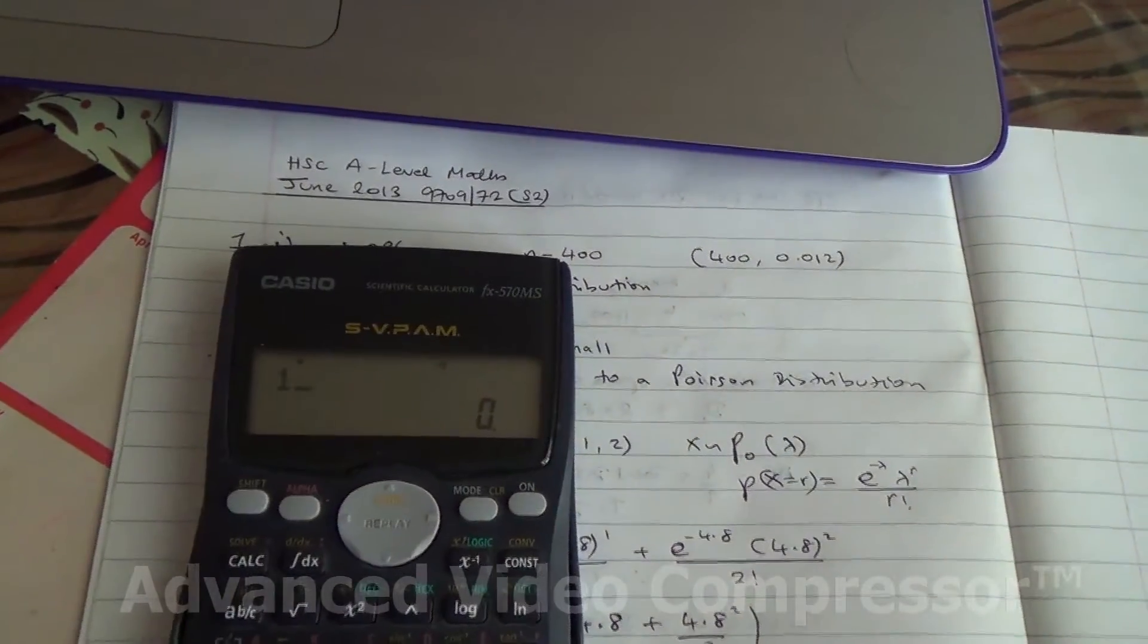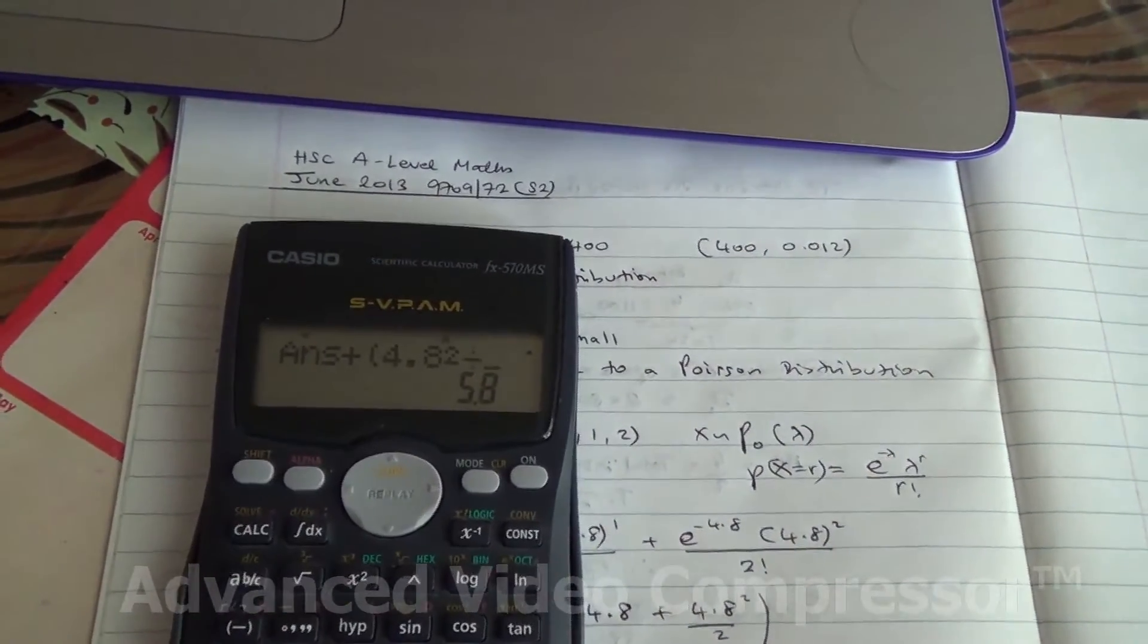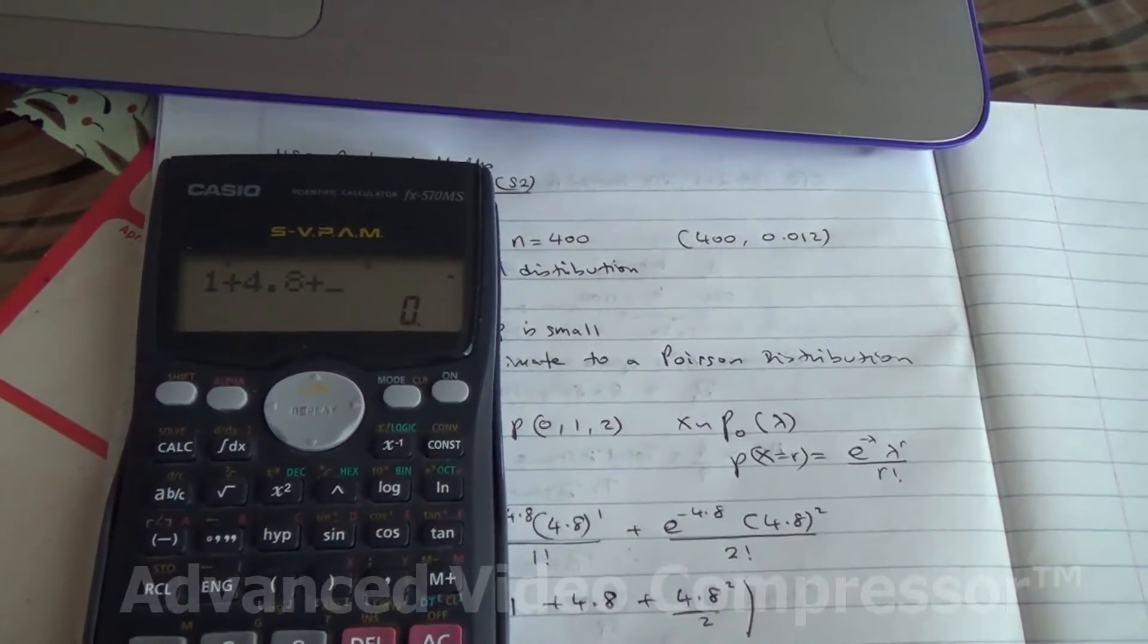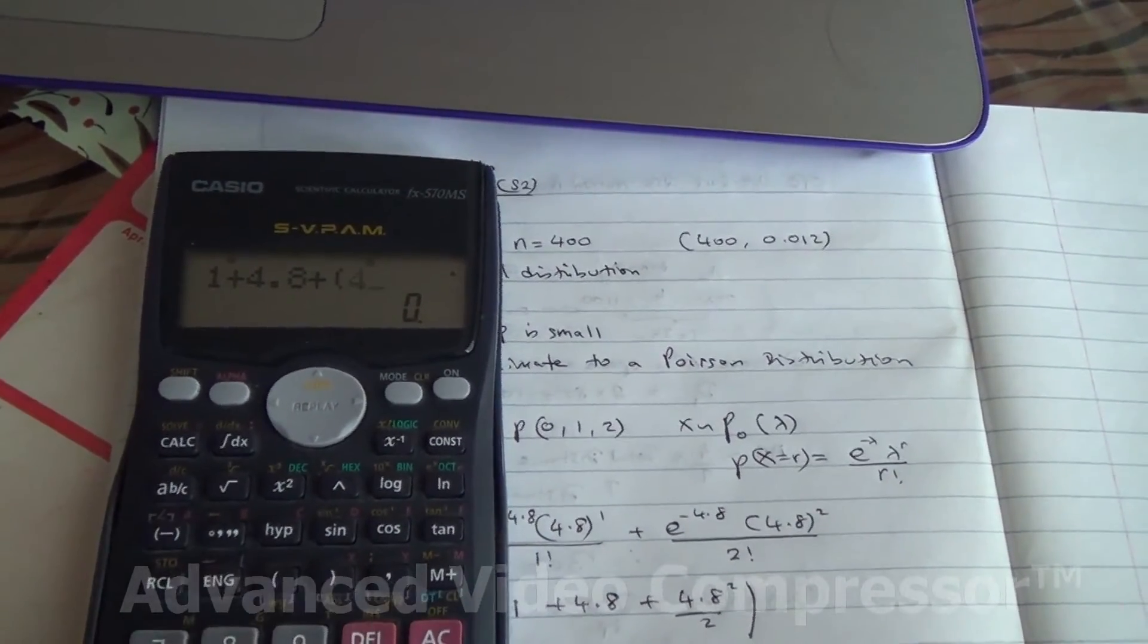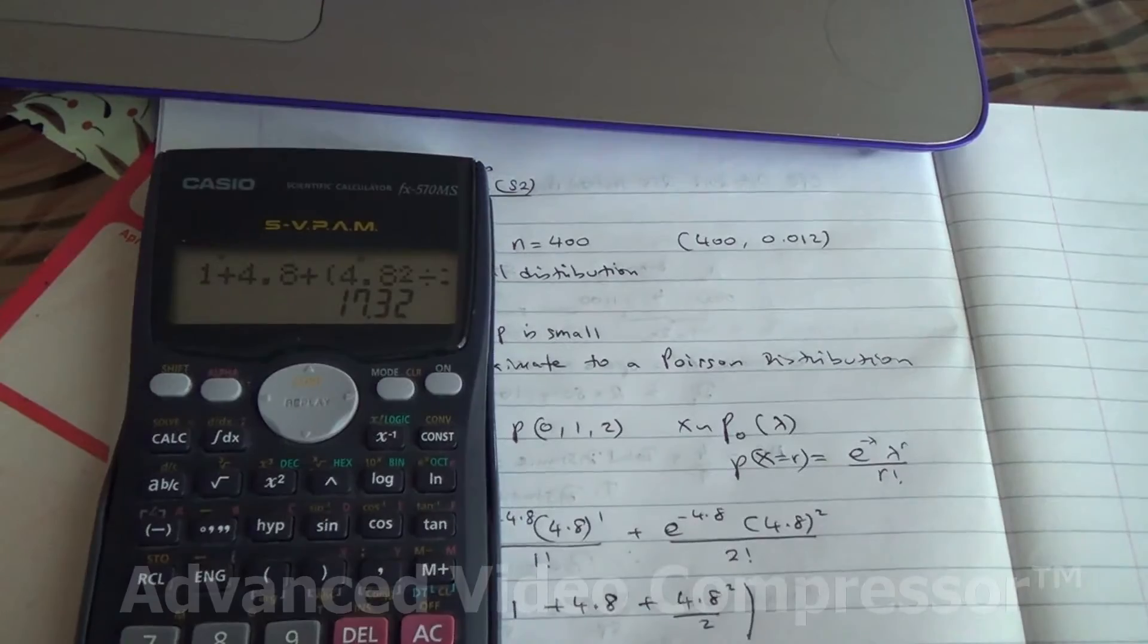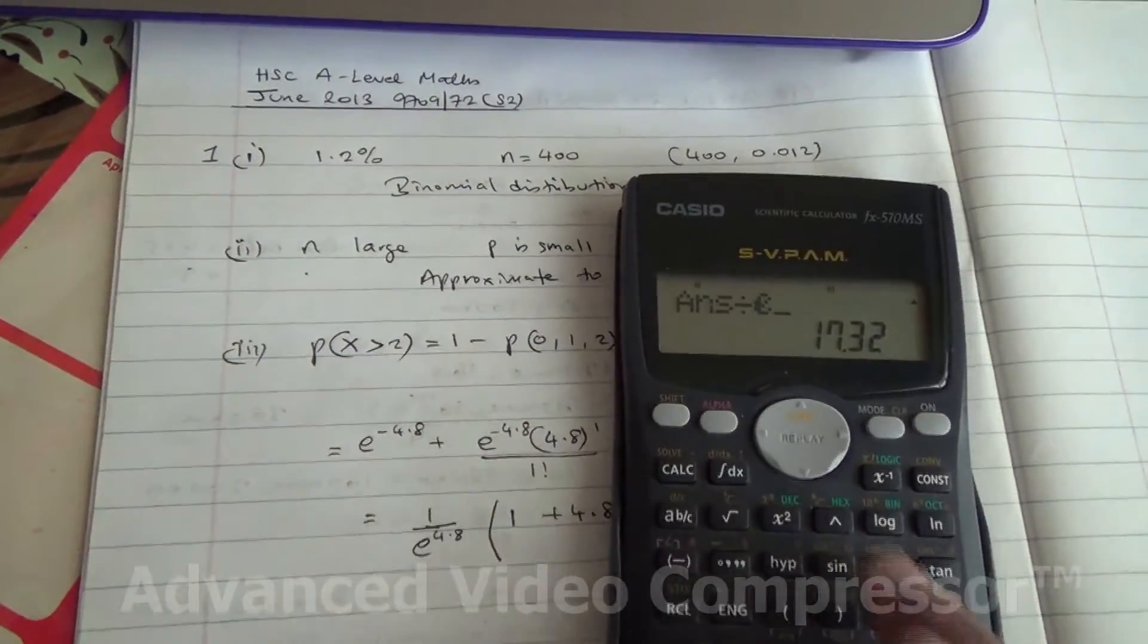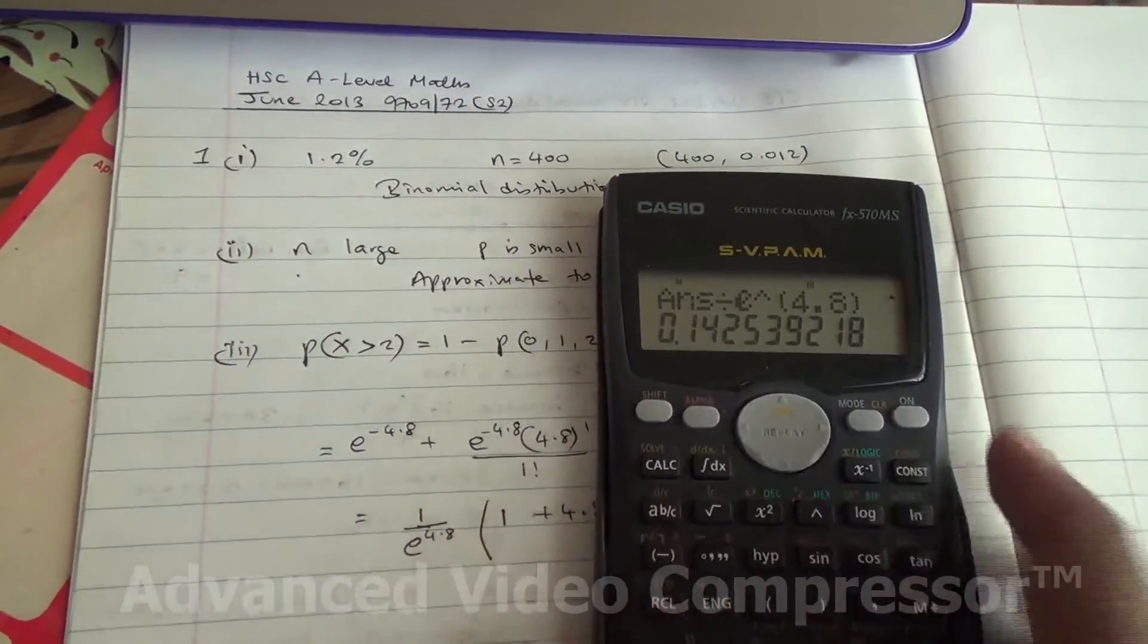So let's do this on the calculator. We got 1 plus 4.8 plus 4.8 to the square over 2. Hold on, 1 plus 4.8 plus 4.8 to the square divided by 2, this much, divided by e to the power of 4.8. E to the power of 4.8 gives 0.142539 and so on.